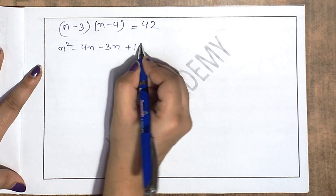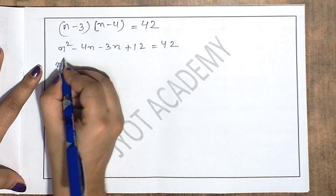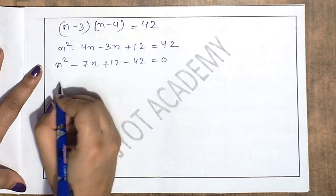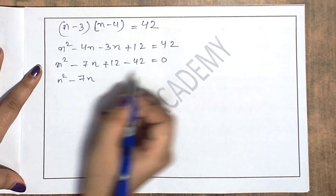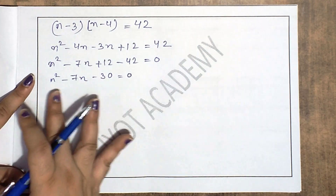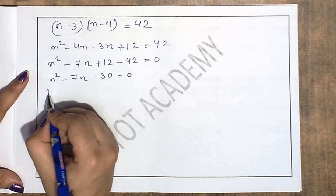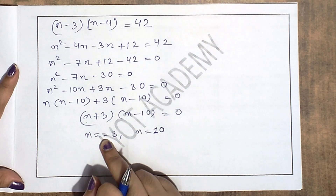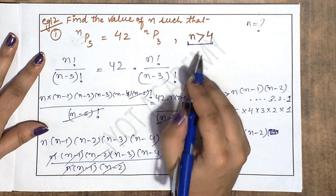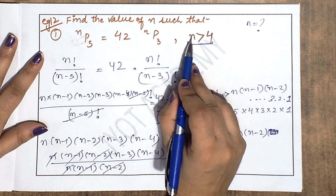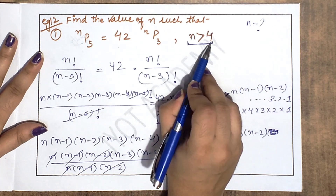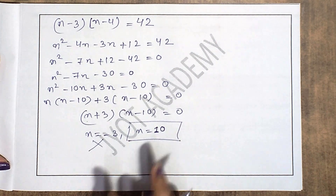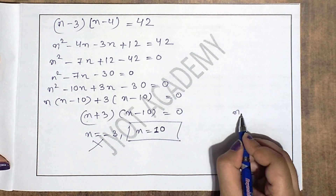Multiply karenge: n² − 7n + 12 = 42, toh n² − 7n − 30 = 0. Factors nikalenge: (n + 3)(n − 10) = 0, so n = −3 ya n = 10. Kyunki given hai n > 4, negative value nahi lenge. Answer hai n = 10.